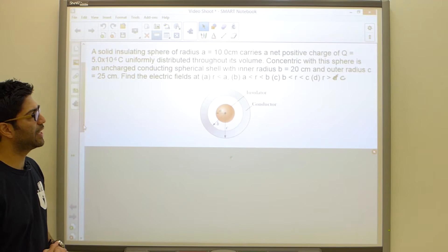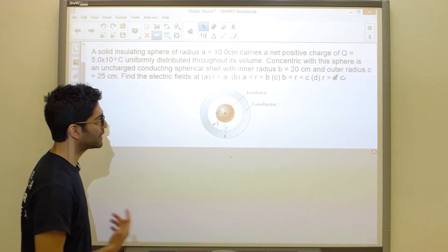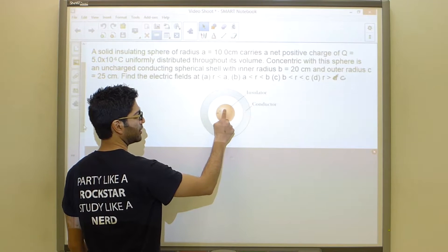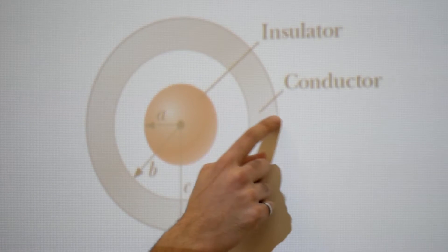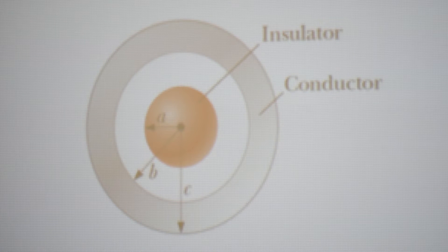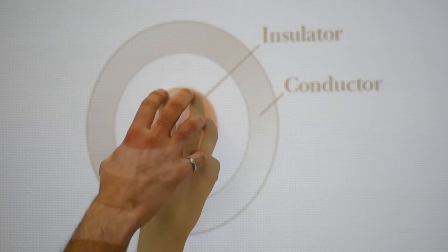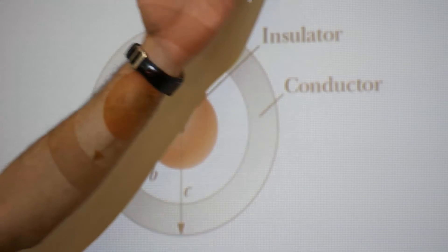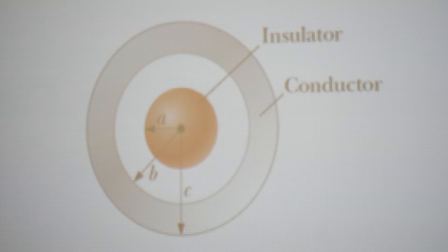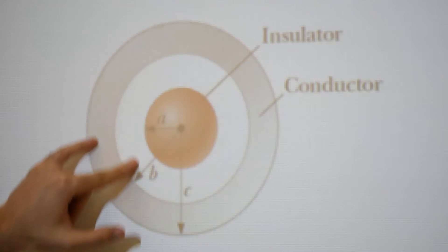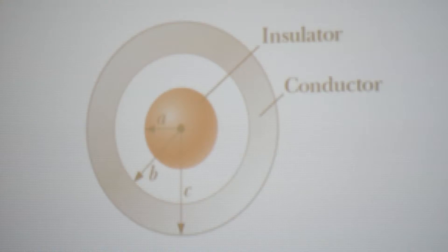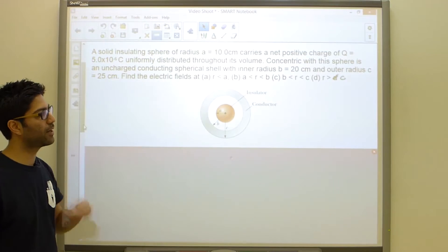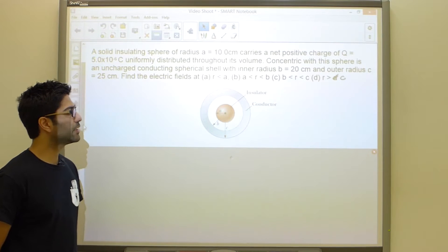We need to find the electric field inside the sphere, between the sphere and the shell, between the shell surfaces, and outside everything. We should remember that this inner object is an insulator and the outer shell is a conductor. For an insulator, charge is distributed throughout its volume; for a conductor, charge resides only on the surface. The conductor is currently uncharged, so we don't place any charge on it.